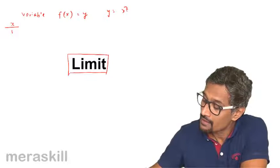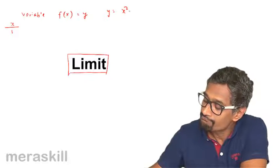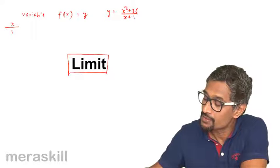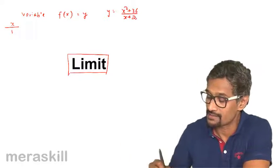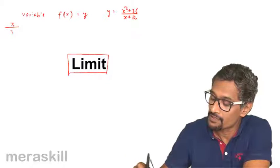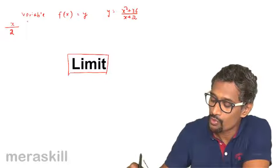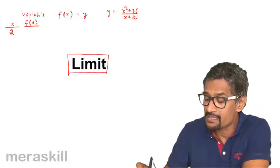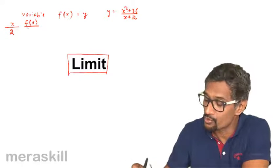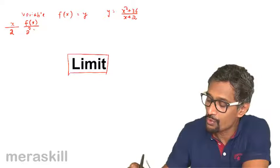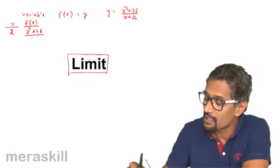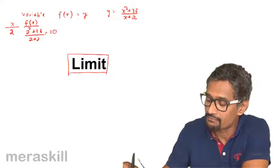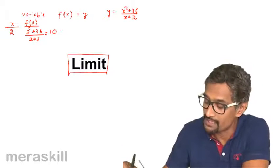Suppose you have the function y equals x squared plus 36 upon x plus 2, and you want to check what the function becomes when x is equal to 2. As x comes closer and closer to 2, f of x attains a value of 2 squared plus 36 upon 2 plus 2, which turns out to be 40 by 4, which is 10.